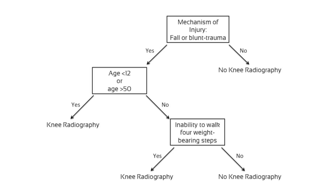Take a look at the following diagram outlining the process. If you see a patient with a reported fall or blunt trauma in combination with either age younger than 12 or older than 50 years old, or an inability to walk four full weight-bearing steps, the decision rule is 100 percent sensitive and 79 percent specific for the detection of fractures.